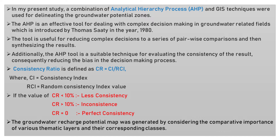The consistency ratio is defined by the consistency index divided by the random consistency index value. If the value of the consistency ratio is less than 10%, then it is considered as acceptable. If the value is greater than 10%, then it is considered as inconsistent. And if the value is equal to zero, then it is considered as perfect consistency.